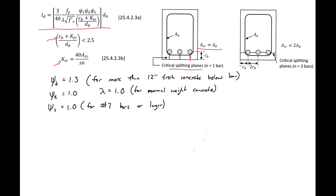Next we need to find CB for our two possible splitting planes. For the cover splitting plane, CB is measured from the center of our longitudinal bar to the outside of the beam. So CB equals 1.5 inches of cover plus the diameter of our transverse ties — we have number four ties, so half inch — plus half of our number eight bar diameter, giving us a CB for cover of 2.5 inches.